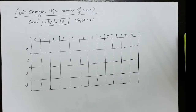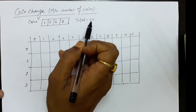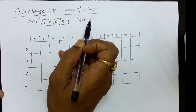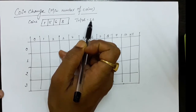In this lecture we will learn about the coin change problem and we have to find out the minimum number of coins by which a change can be generated. For example, we have coins of denomination 1, 5, 6 and 8, and we have to generate 11. We have to find out how many minimum coins are required by which this denomination of 11 can be generated.